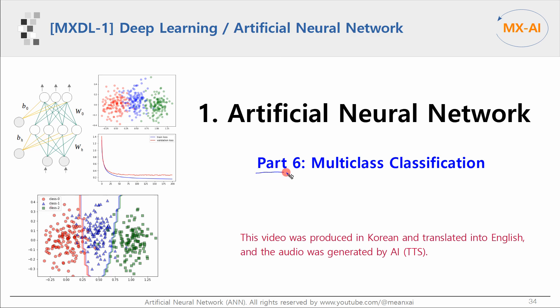This is part 6 of a series on artificial neural networks. In this video, we will look at multi-class classification. This video was produced in Korean and translated into English, and the voice was generated by AI text-to-speech.